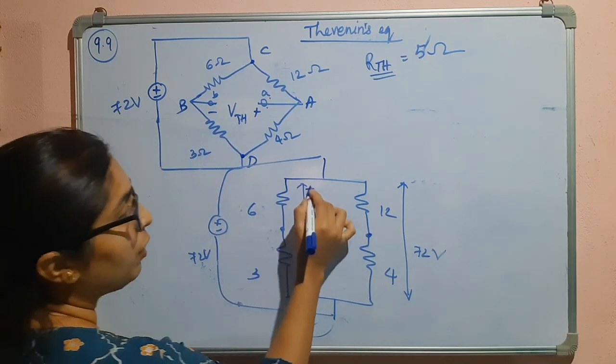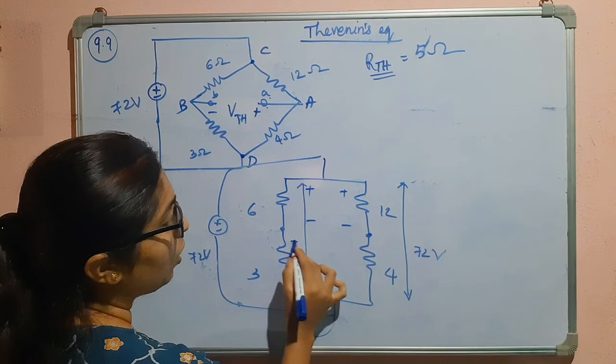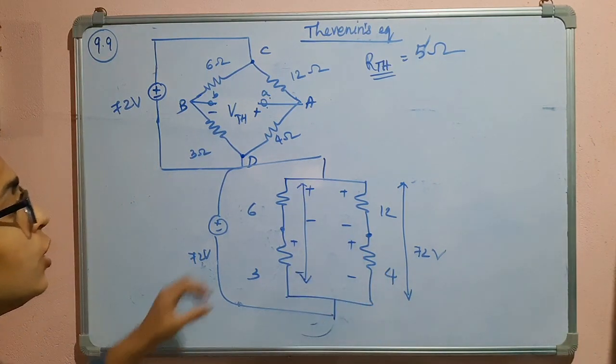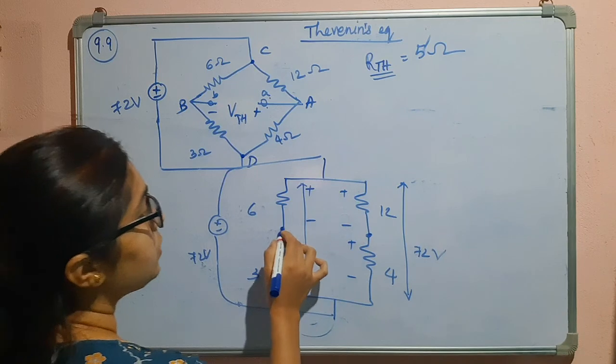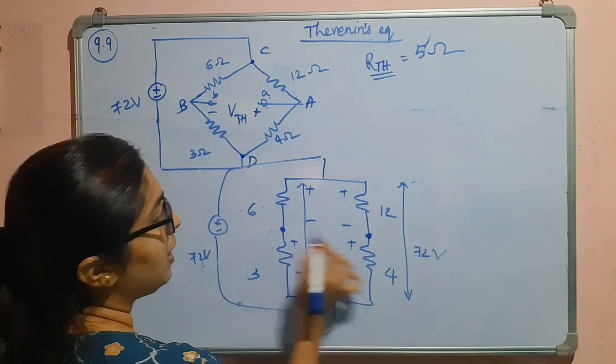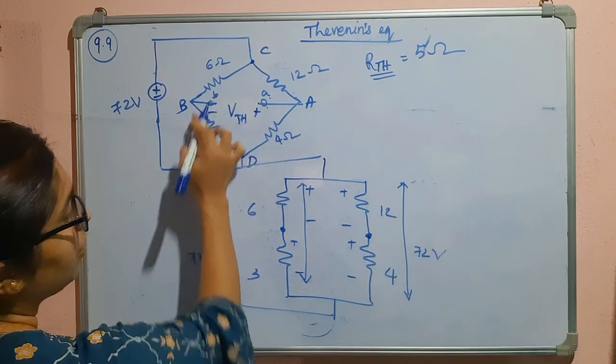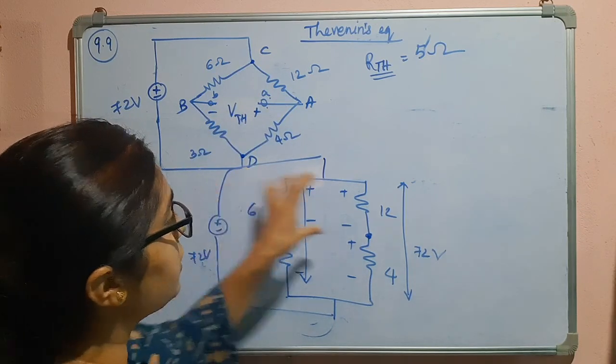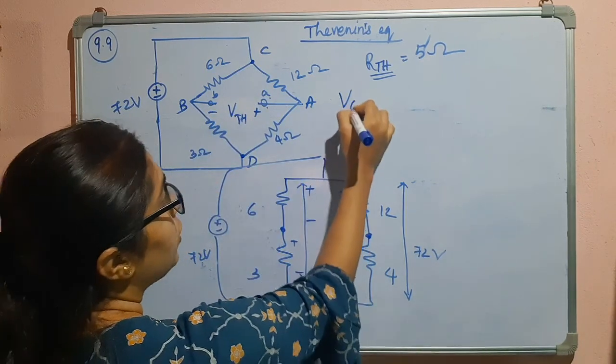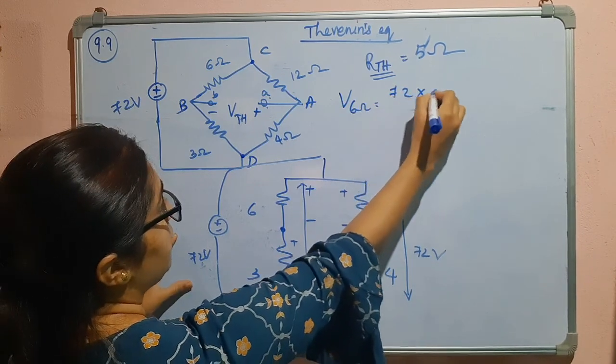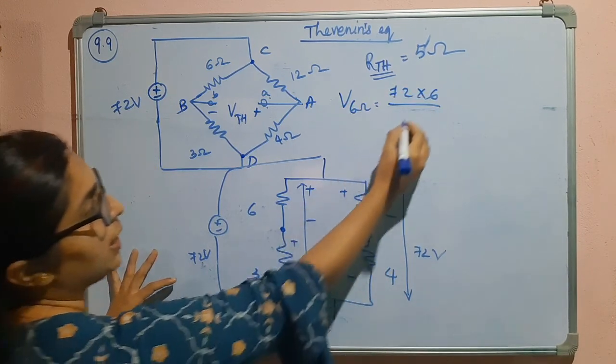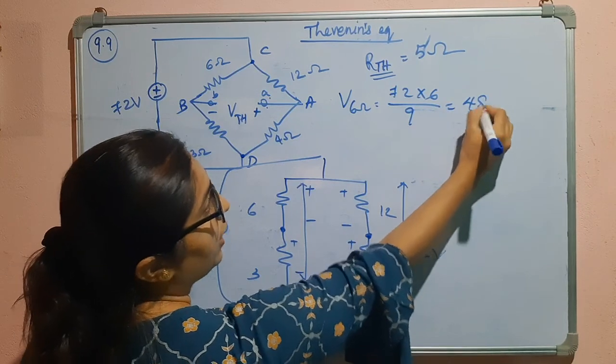So here can we find out the voltages across this using the voltage divider rule? Yes. We are concerned with this voltage, that is plus minus VTH. I will find out the voltage across 6 and the 12 ohm. Voltage across 6 ohm will be 72 into 6 divided by 6 plus 3, 9. So this is 48 volts.